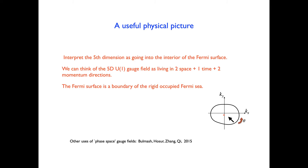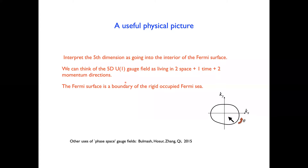It's useful to have a physical picture for what these extra dimensions are. We can interpret the fifth dimension as going into the interior of the Fermi surface. So we think of this 5D U(1) gauge field as living in two space dimensions, one time, and two momentum directions. The Fermi surface itself is then the boundary of the rigidly occupied Fermi sea. In this sense, these five dimensions correspond to four space-and-momentum dimensions plus one time. This point of view, where one introduces phase-space gauge fields, has been explored in related work by Shiying Young T. and collaborators.